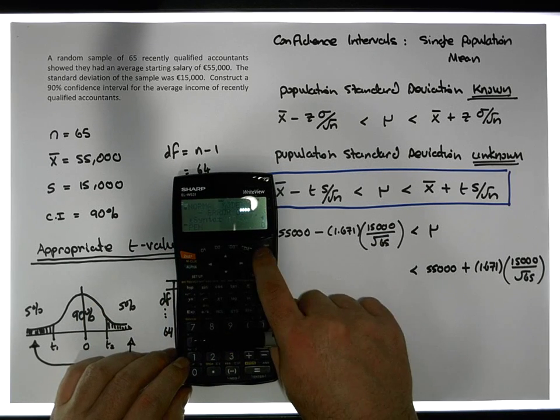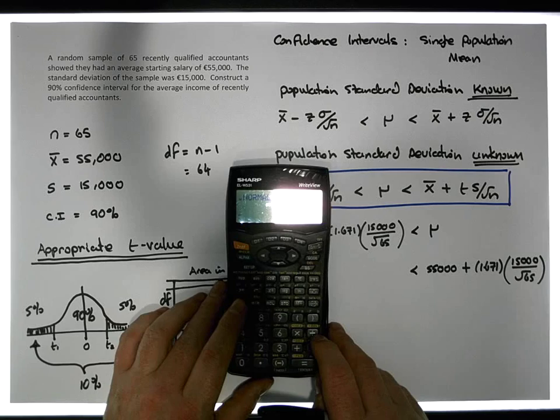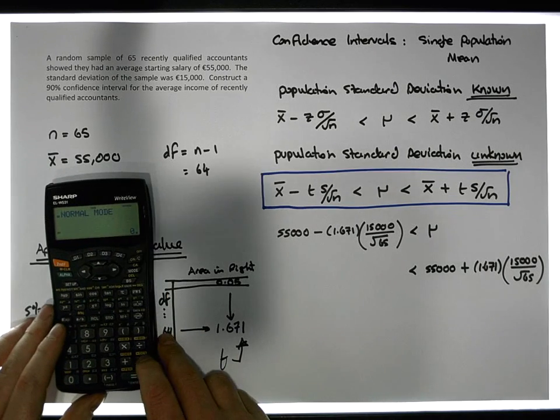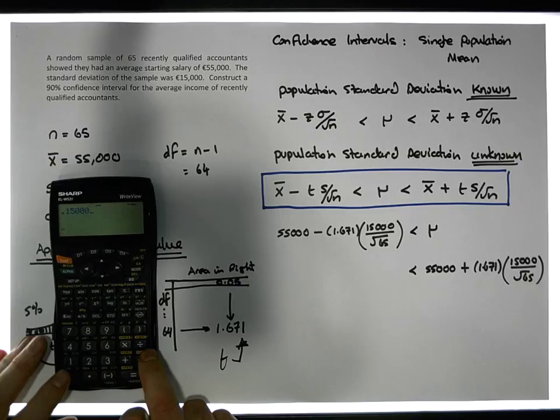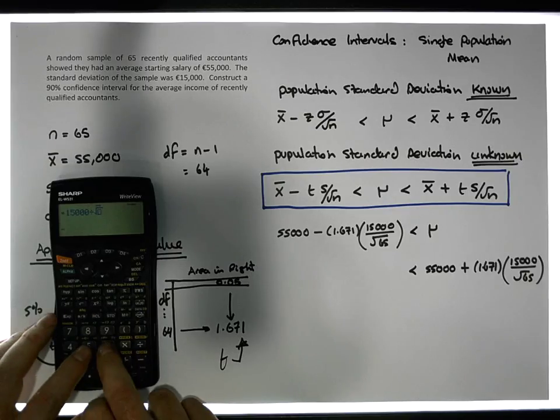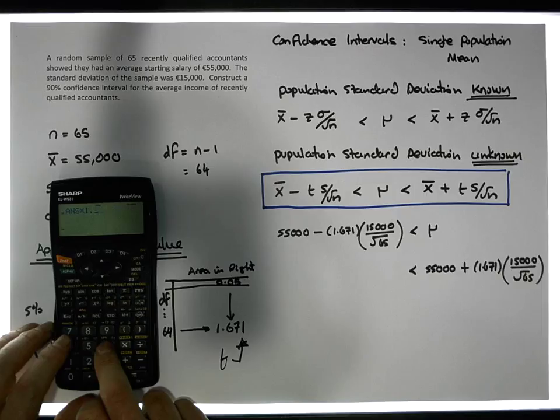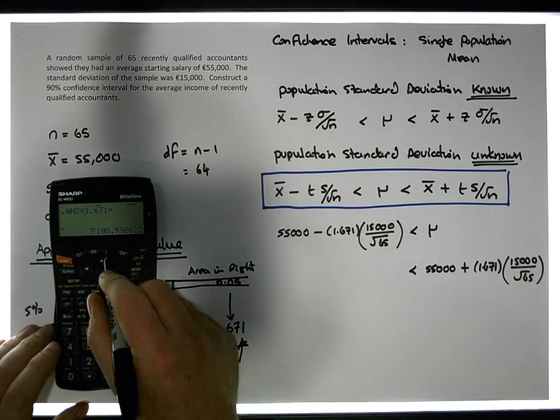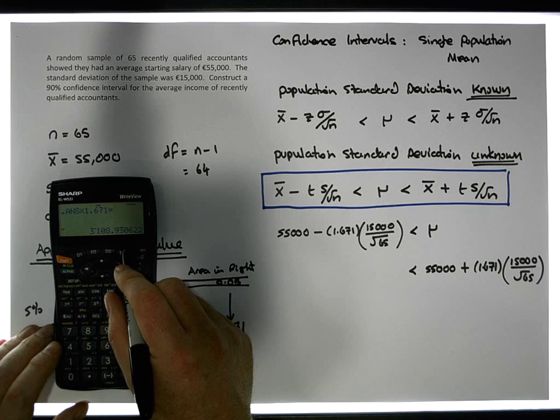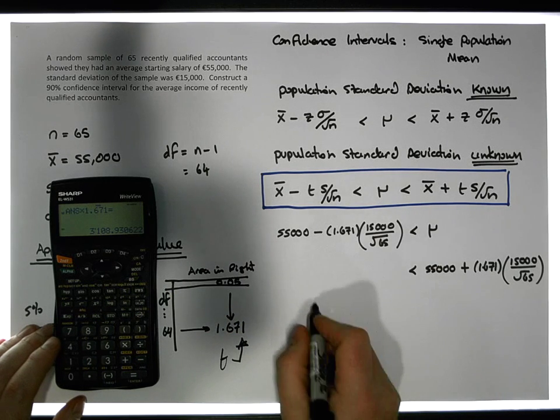15,000 divided by the square root of 65 gives us a value, and I want to multiply that by 1.671, my t-statistic, to give me a value of 3,108.93 or 3,109 euros.